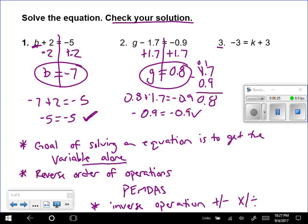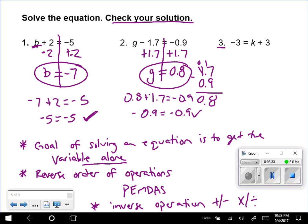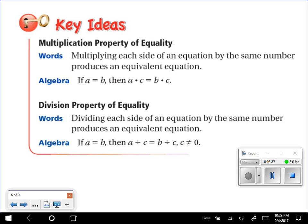So go ahead and try 3. Try to get your variable alone. And then make sure you check your answer as well. So since we talked about adding and subtracting, we're also going to talk about multiplying and dividing. So again these properties say the same thing. So you can just combine them into one sentence.